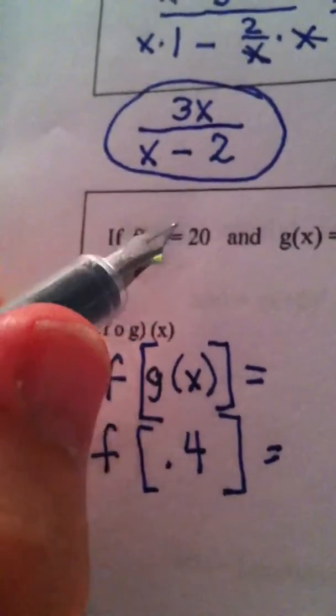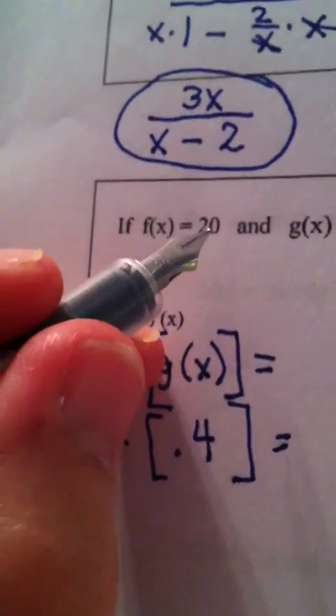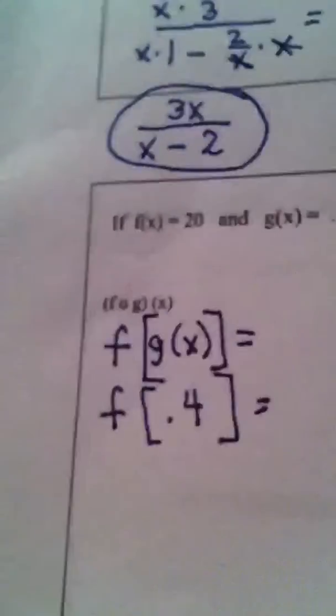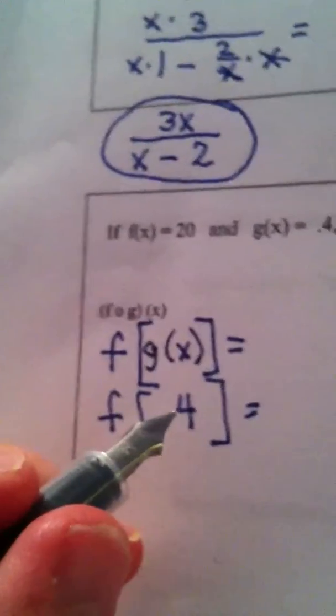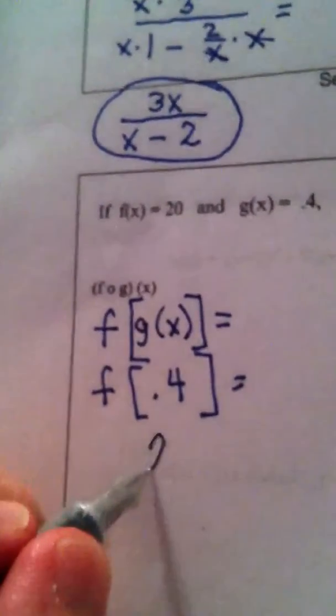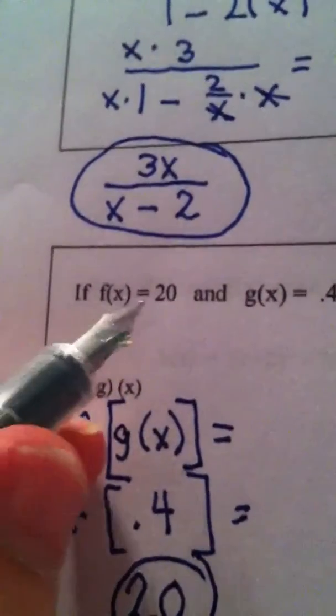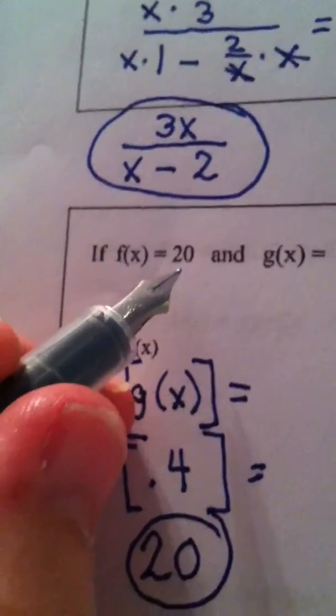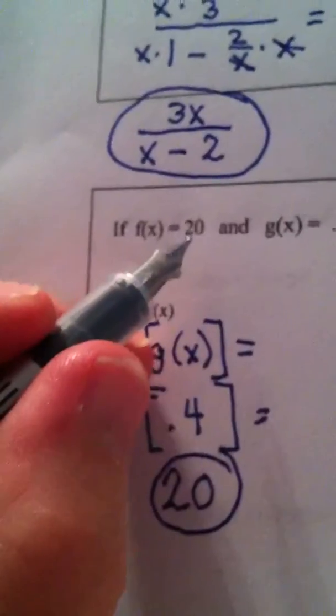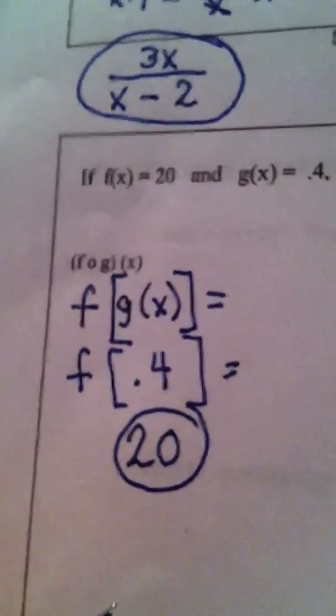So what this rule is telling me right here is, no matter what I put into f, I'm going to get out the answer 20. So to be completely honest, this 0.4 is irrelevant. f of anything is going to be 20. And the reason behind that is, f of x is a constant function. No matter what you put in, the answer will be 20. So that is my final answer to this first problem.